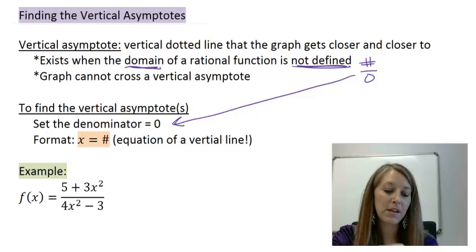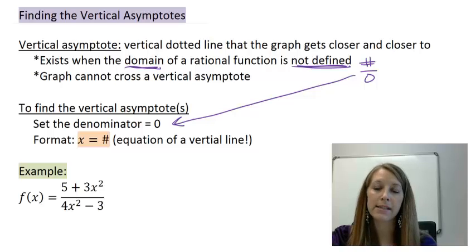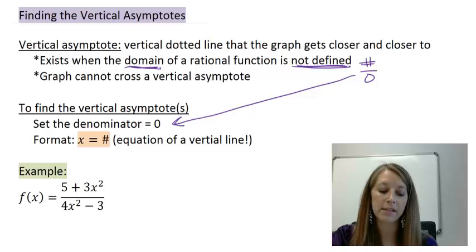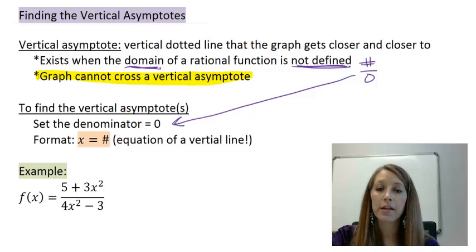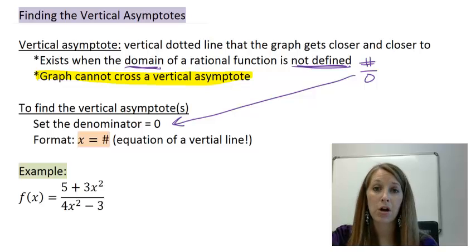Now something very specific to note about vertical asymptotes only, this does not apply to horizontal or oblique asymptotes, is a graph absolutely cannot cross a vertical asymptote. If you're trying to draw a graph, and you see something that's crossing the vertical asymptote, that means you've made an error, or something tricky is happening with the graph. So you're going to have to investigate further.